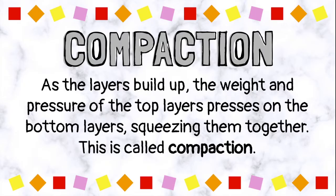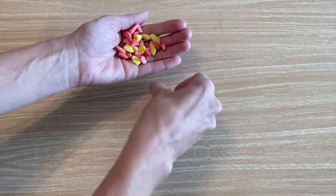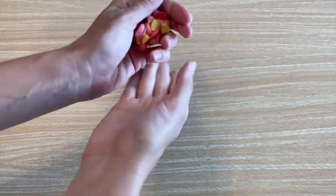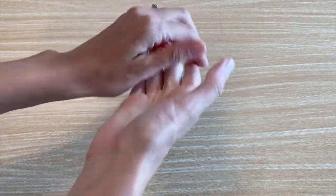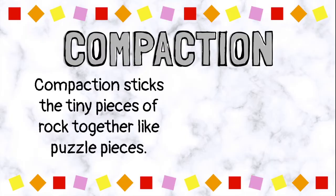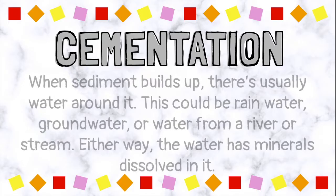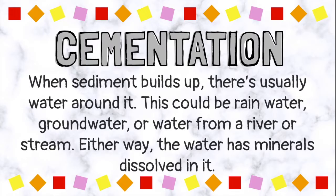We can show compaction using our starburst sediment by squeezing them together with our hands. Compaction sticks the tiny pieces of rock together like puzzle pieces. Cementation happens when the sediment builds up — there's usually water around it. This could be rainwater or groundwater.